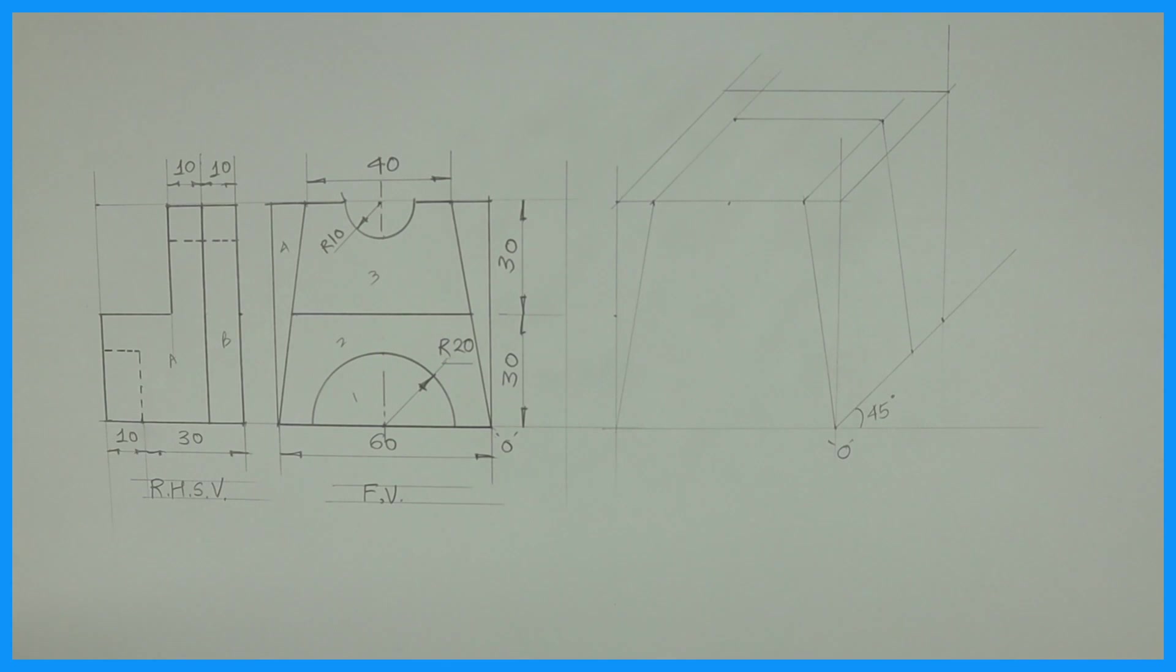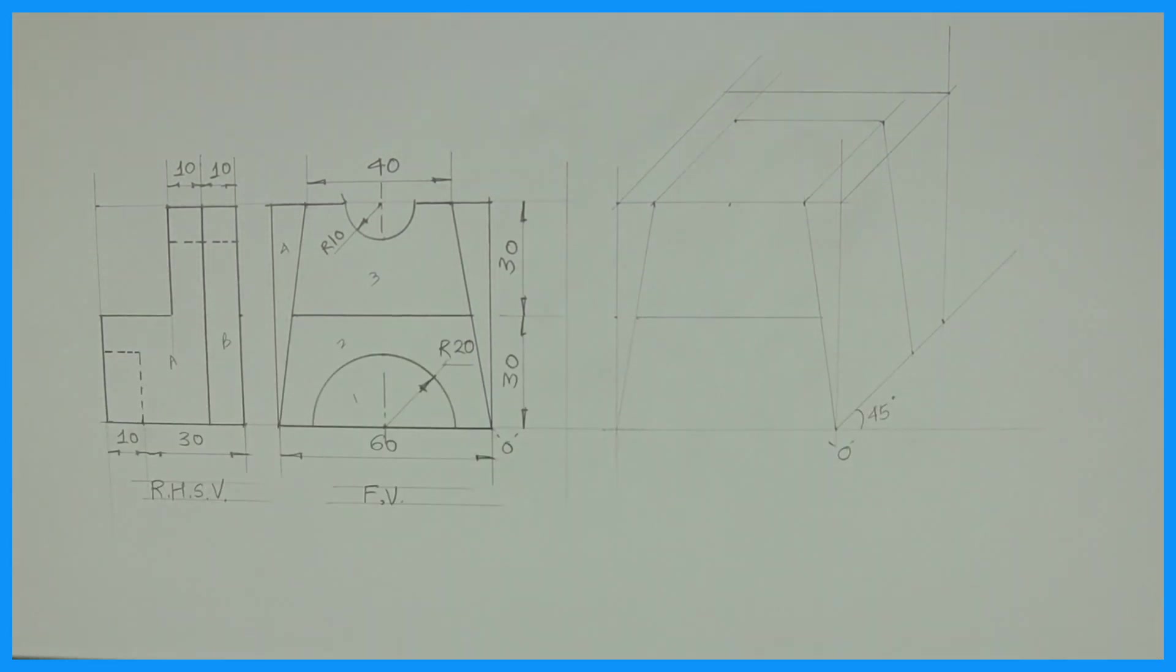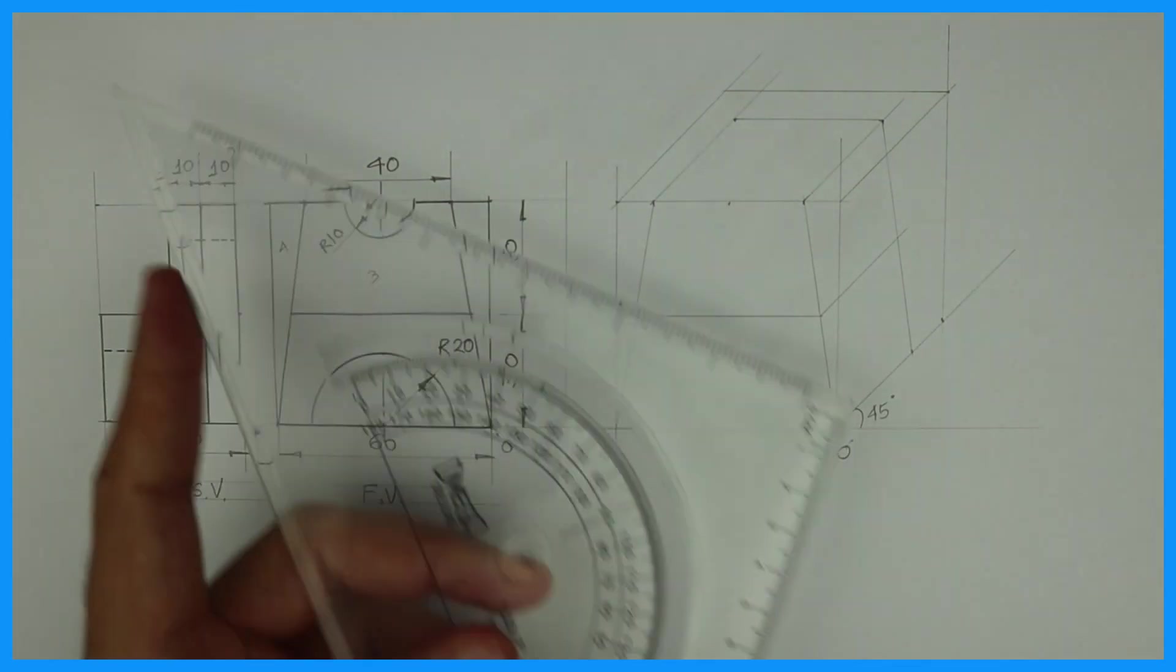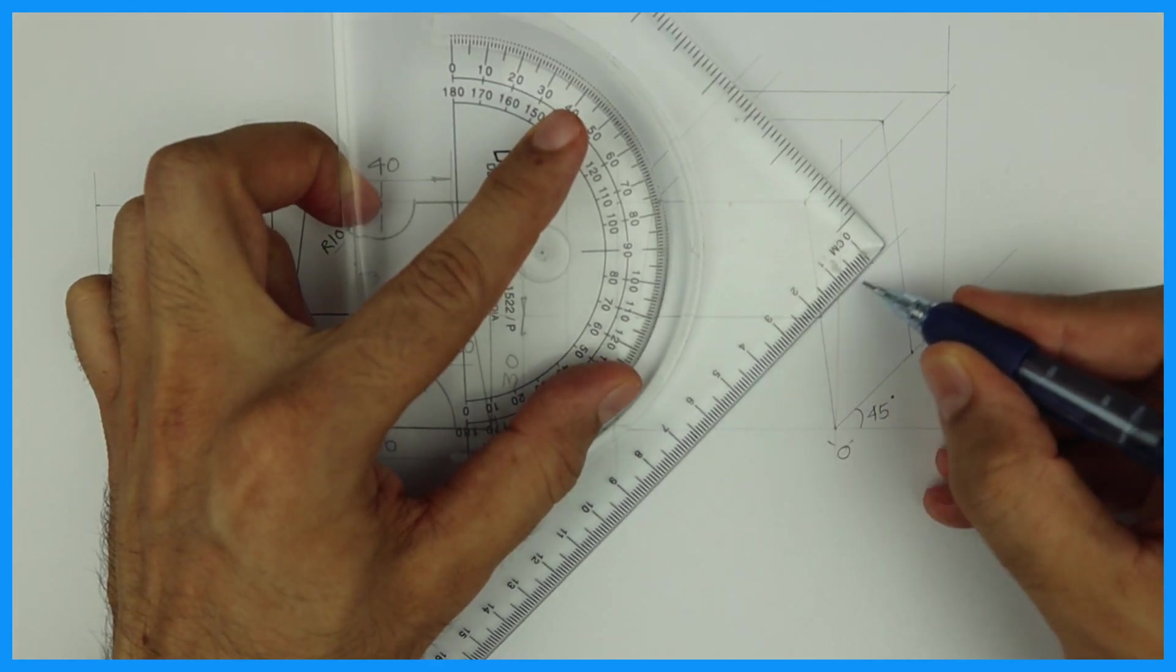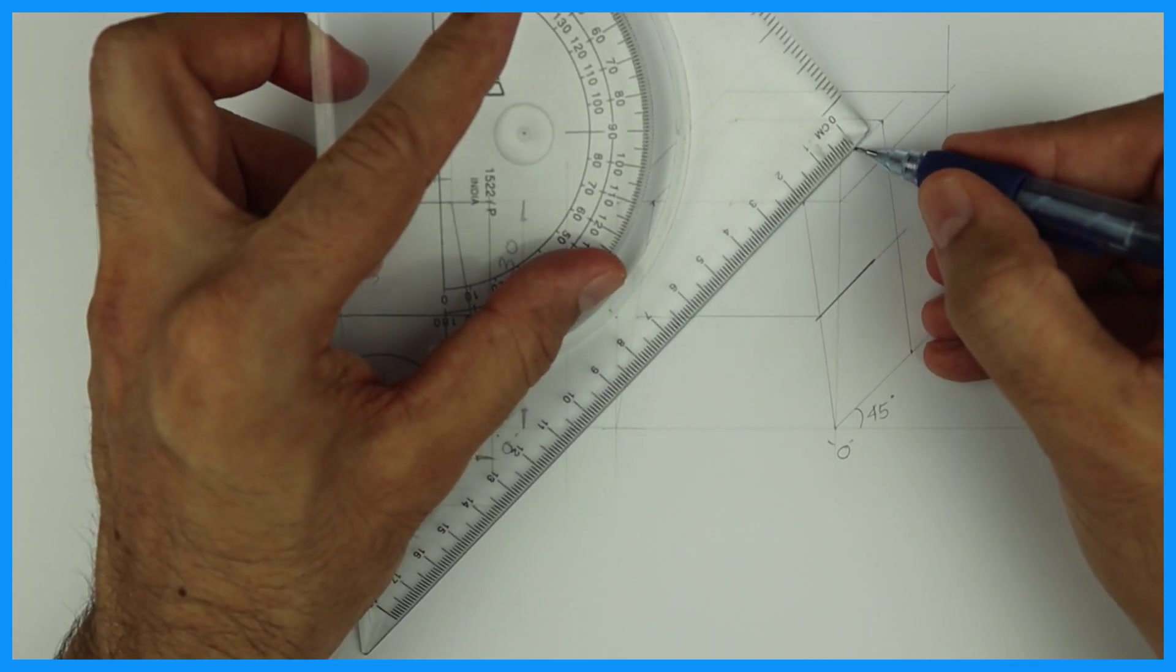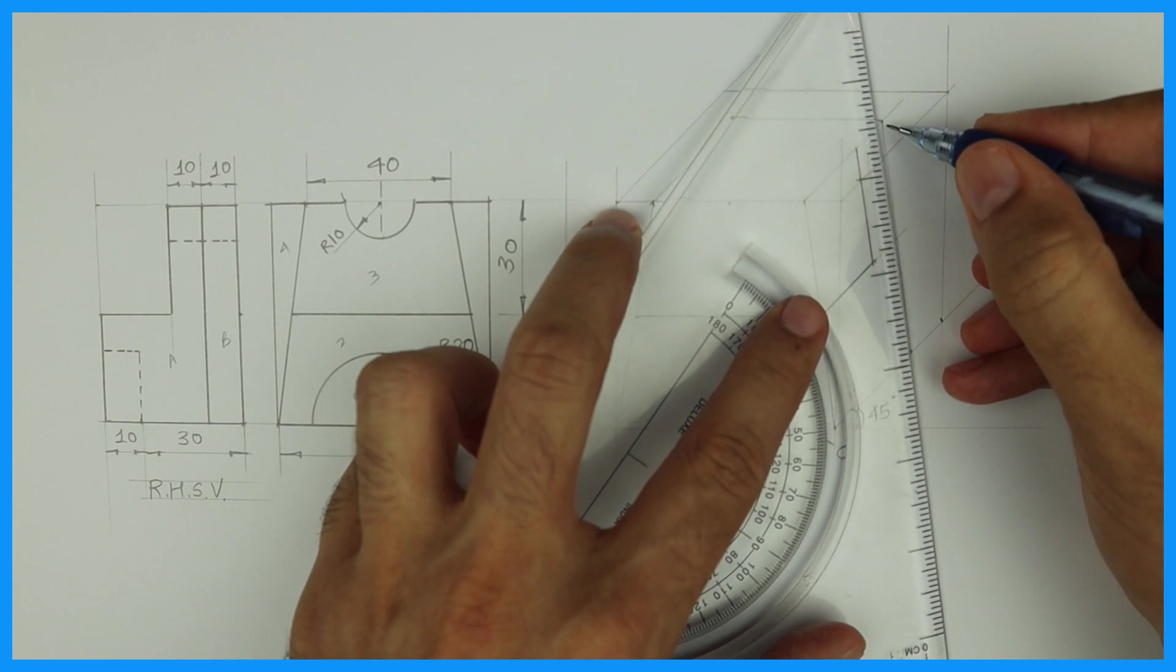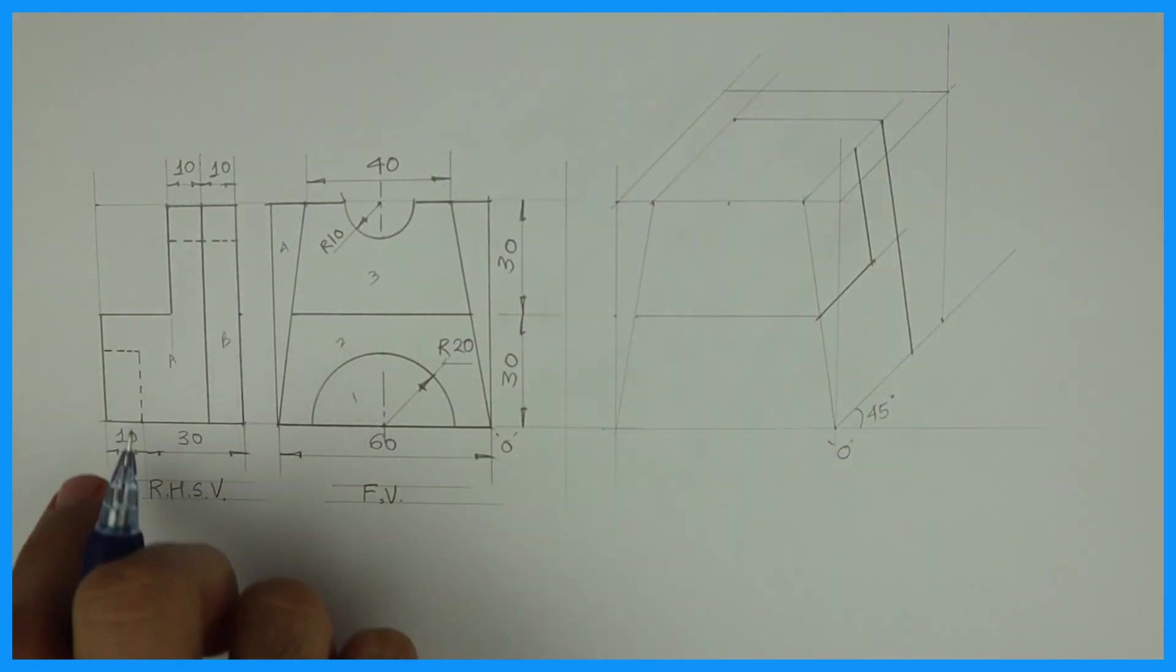So we take 30, we draw a horizontal line. And now we will take this line behind. How much behind, 20. See, I will mark 20 up also and I will join this.